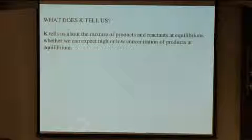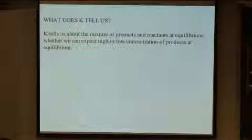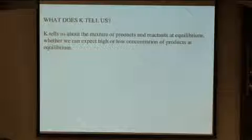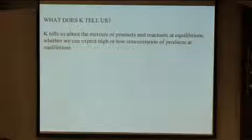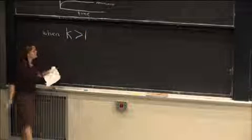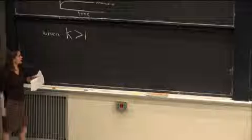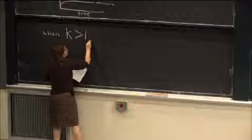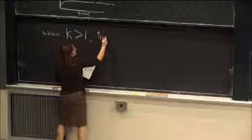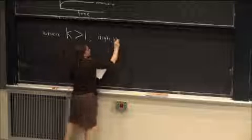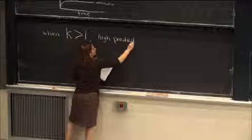So let's look at another example. When you have K that's greater than 1, so more products than reactants at equilibrium, you can think about this in terms of higher products at equilibrium.